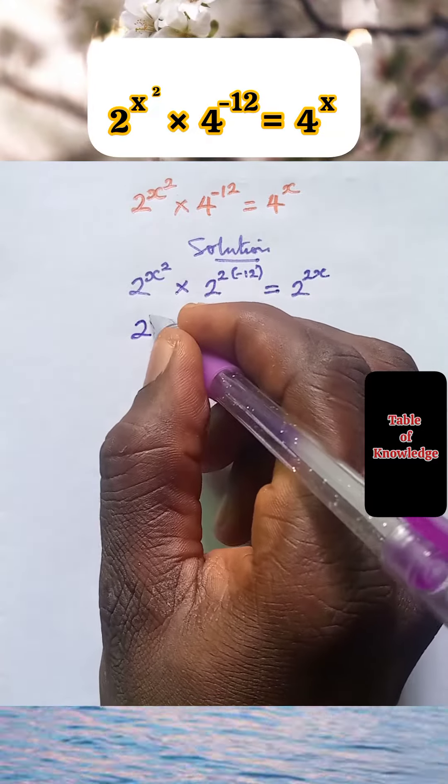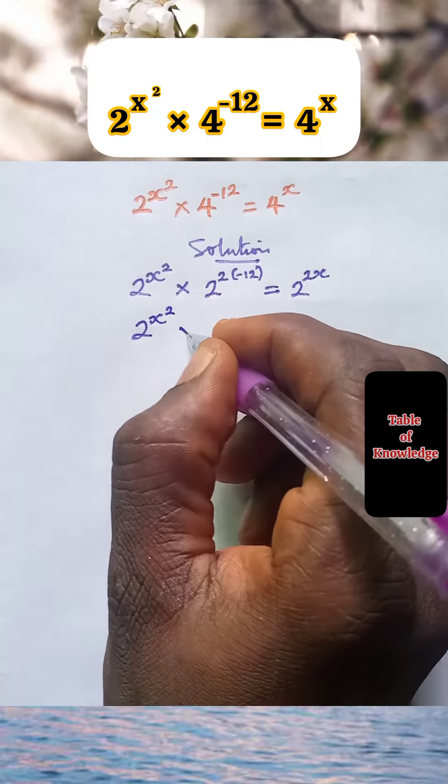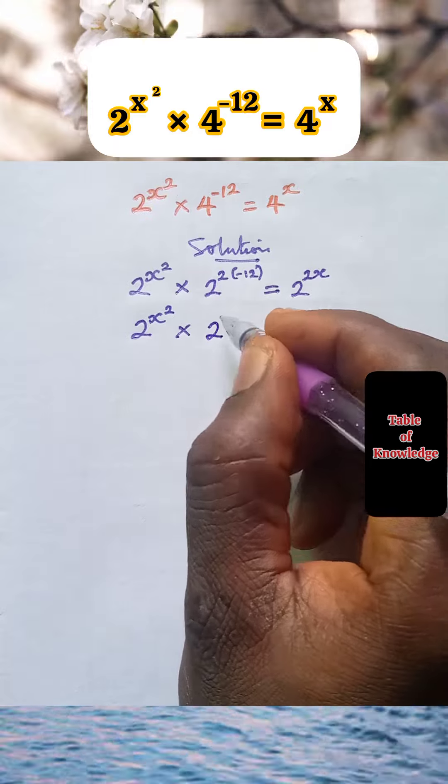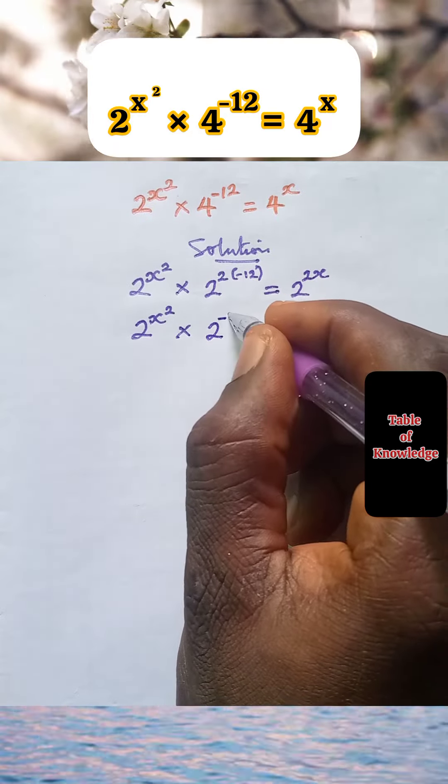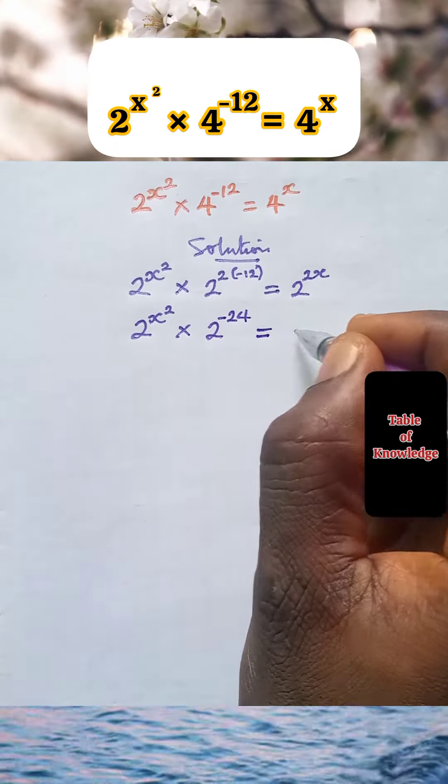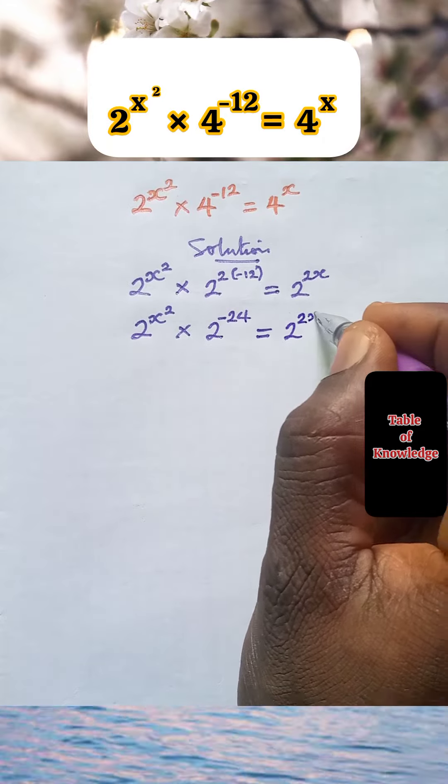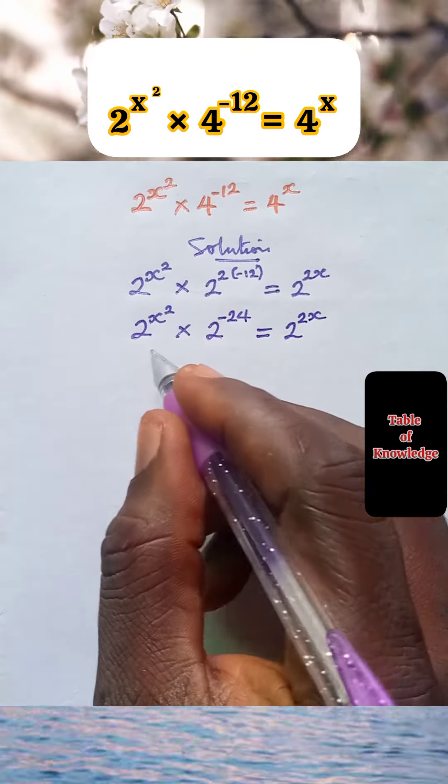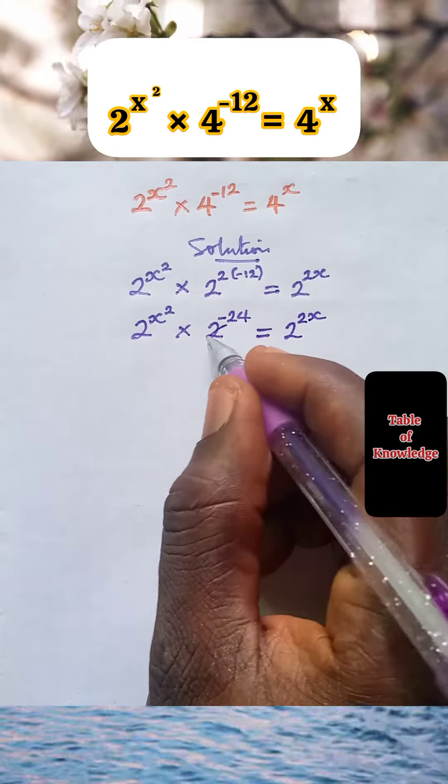Now we have 2 raised to power x square times 2 raised to power 2 times minus 12 is minus 24, equals to 2 raised to power 2x. The bases are the same, so I get to take one of them, which is 2, and we'll add the powers.